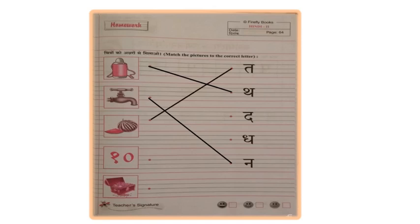Now, what can you see under Tarbuj? Do you know which number is this? This is Das. The, The, Das.